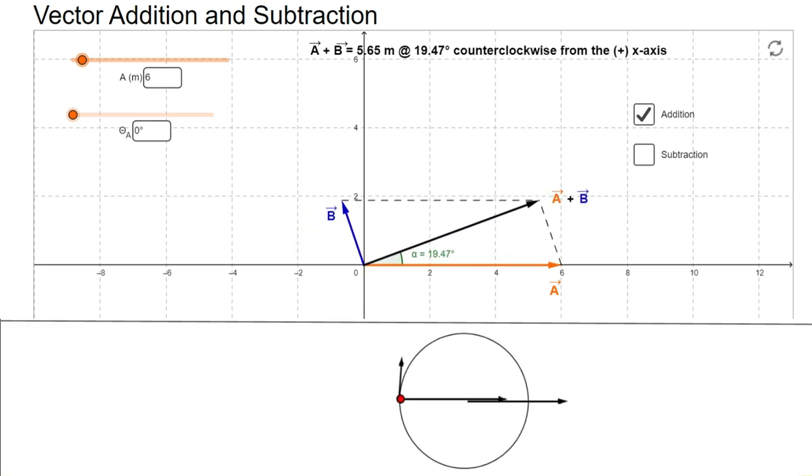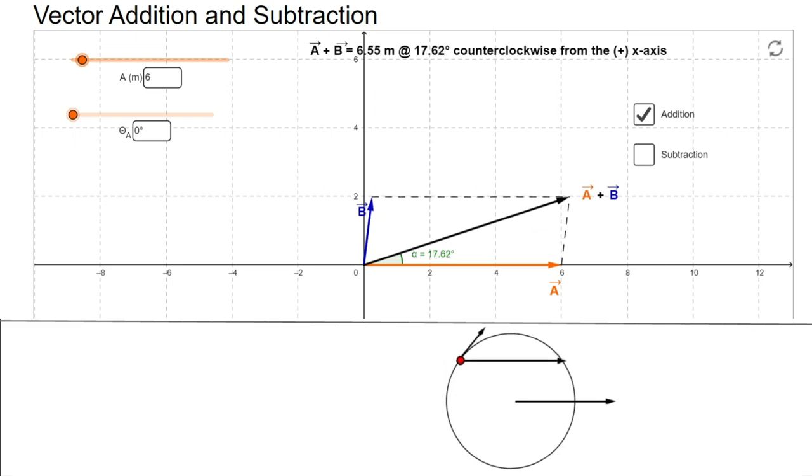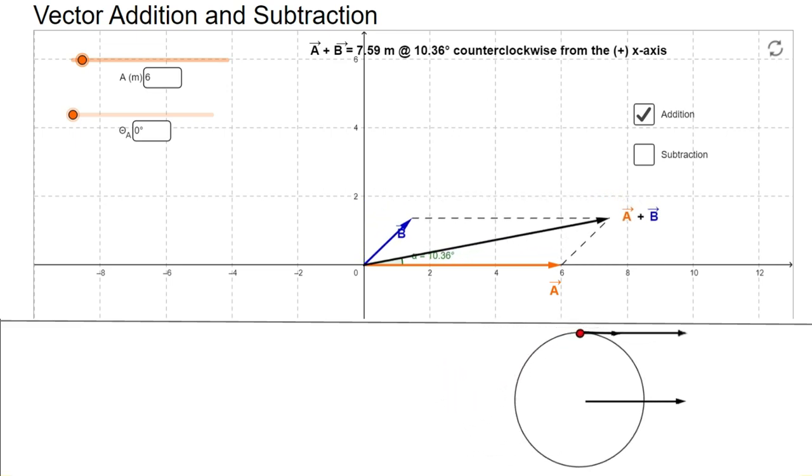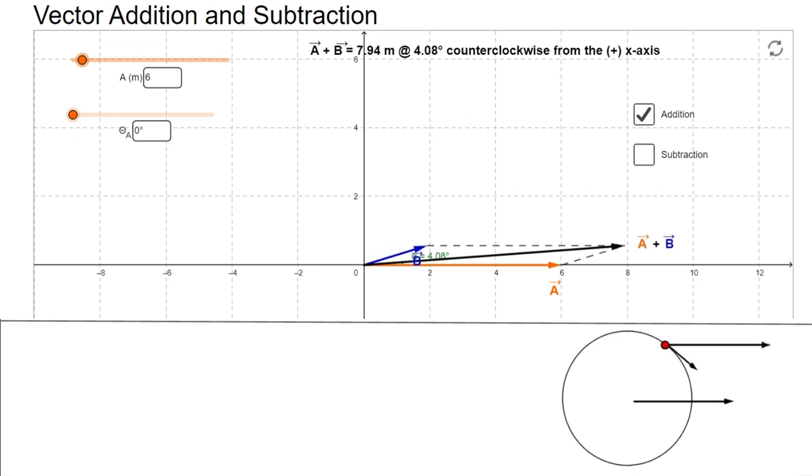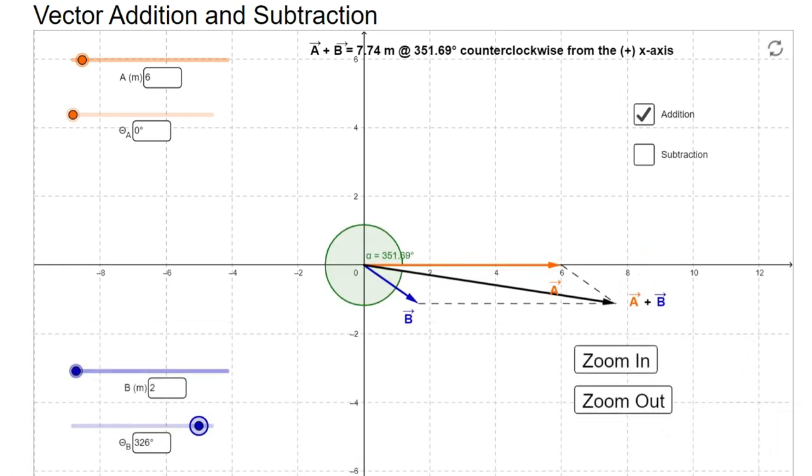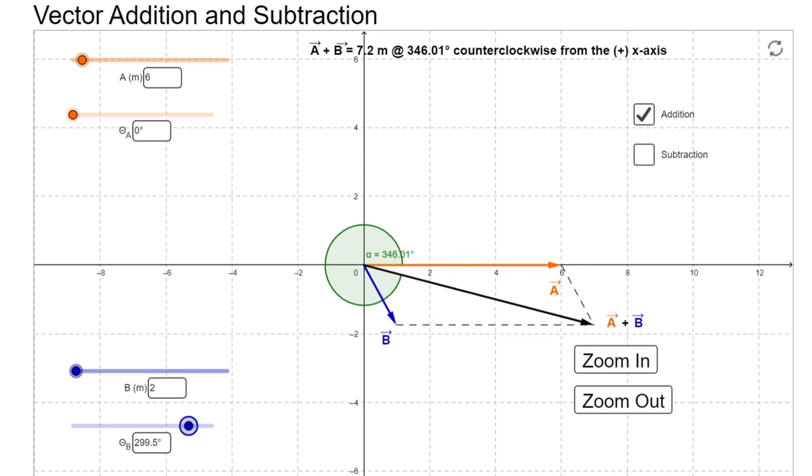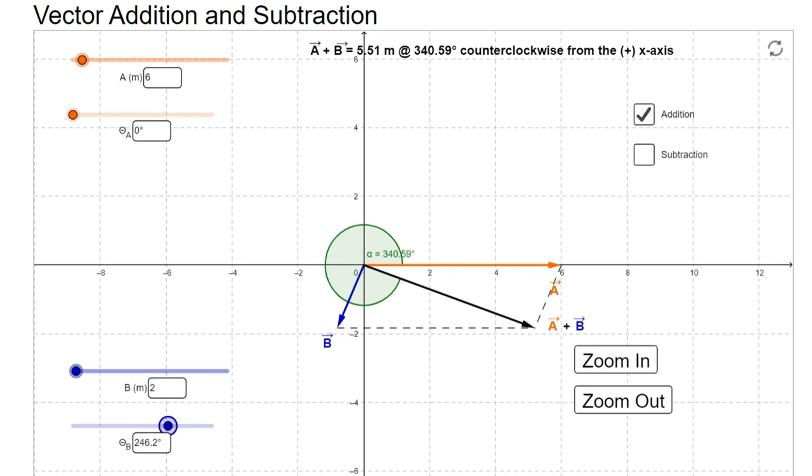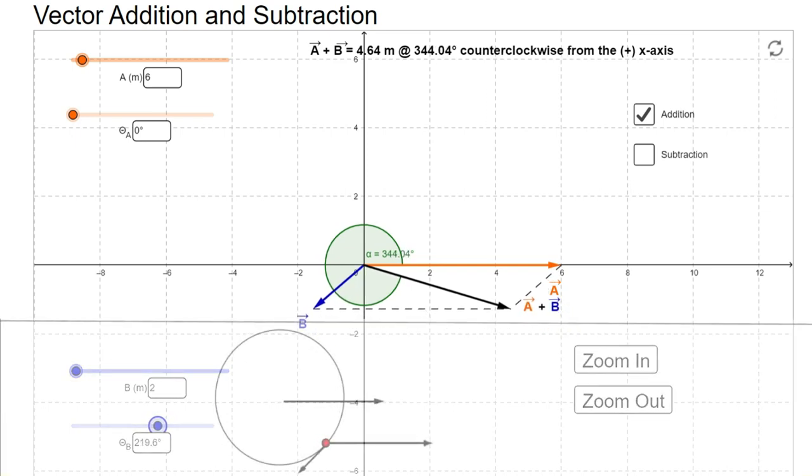Each velocity alone is a constant velocity. When they are both acting on our mass at the same time, the mass's velocity changes. This change is constant. We see an ever-changing rate of acceleration of the mass.